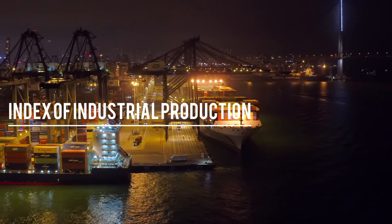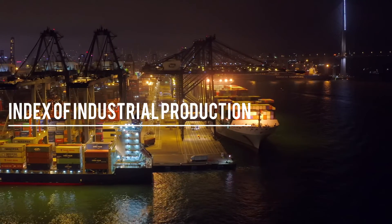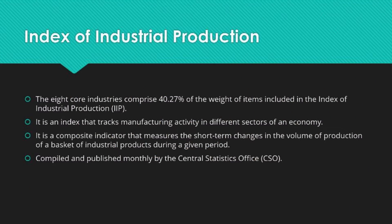The IIP is an index that tracks manufacturing activity in different sectors of an economy. It is a composite indicator that measures the short-term changes in the volume of production of a basket of industrial products during a given period. This index is compiled and published monthly by the Central Statistics Office.